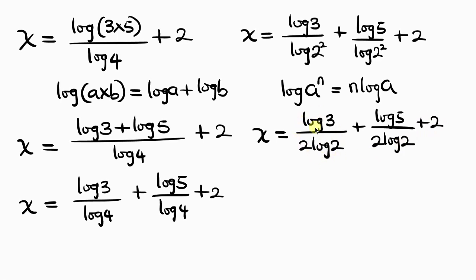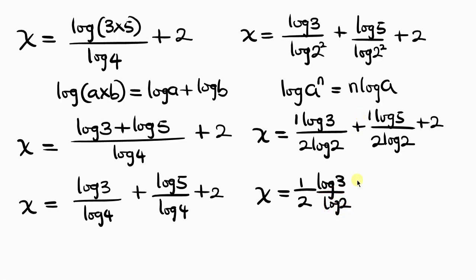Notice that 1 over 2 is common in both fractions — there's an invisible 1 as the coefficient of log 3 and log 5. We can factor that out to write: x = (1/2)·(log 3 / log 2) + (1/2)·(log 5 / log 2) + 2.